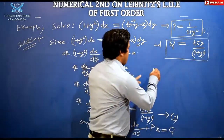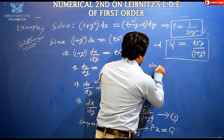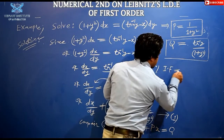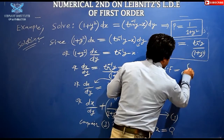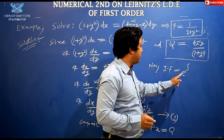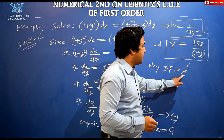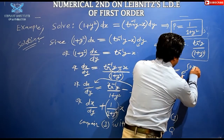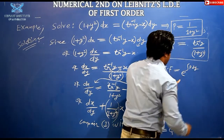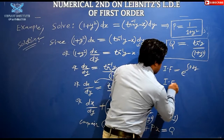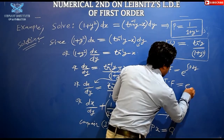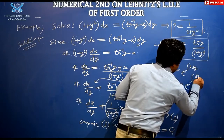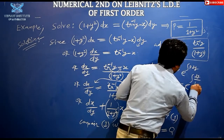The integrating factor (IF) = e^(∫P dy). Note that unlike the previous numerical where we had ∫P dx, here it is ∫P dy. The value of P is 1/(1 + y²), so we compute ∫ dy/(1 + y²).